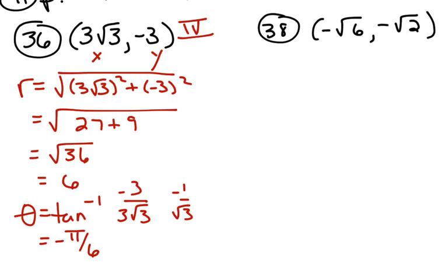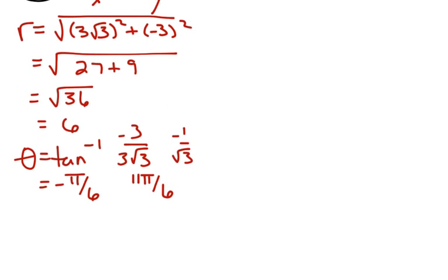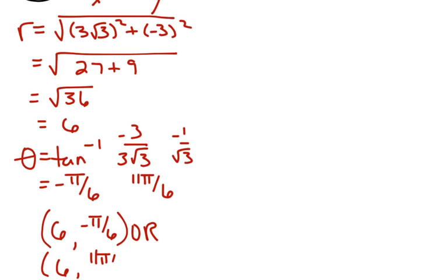If you want the positive quadrant 4 angle, it's 11pi/6. I'll accept either answer — so it's either (6, −pi/6) or (6, 11pi/6). It's got to be one of those two.